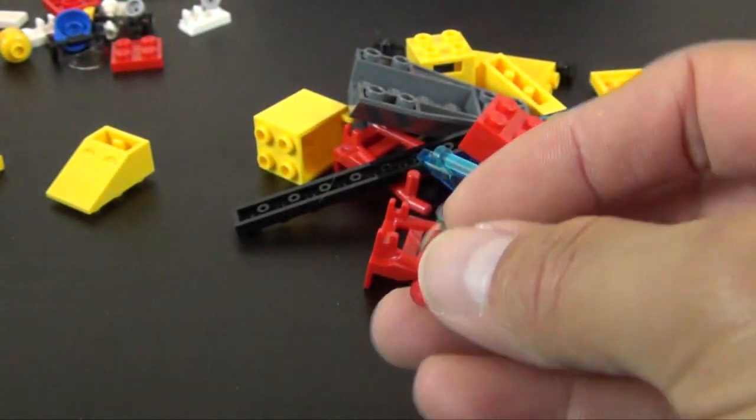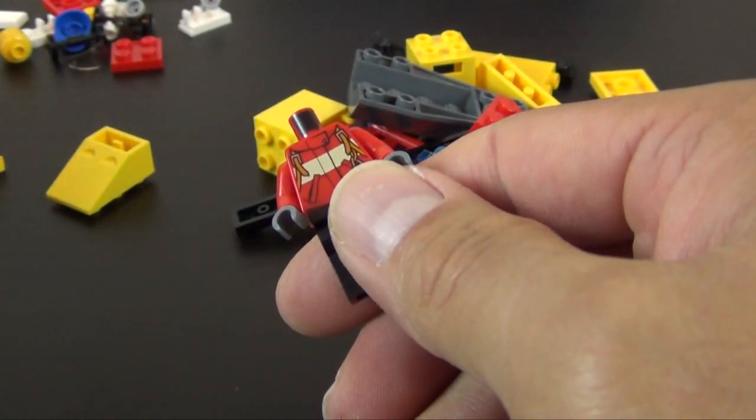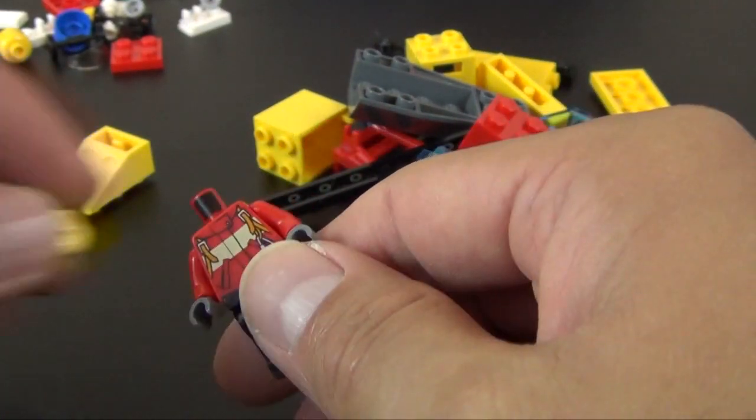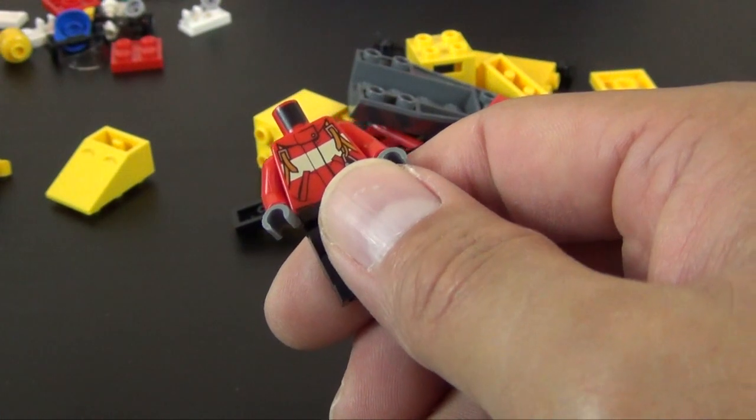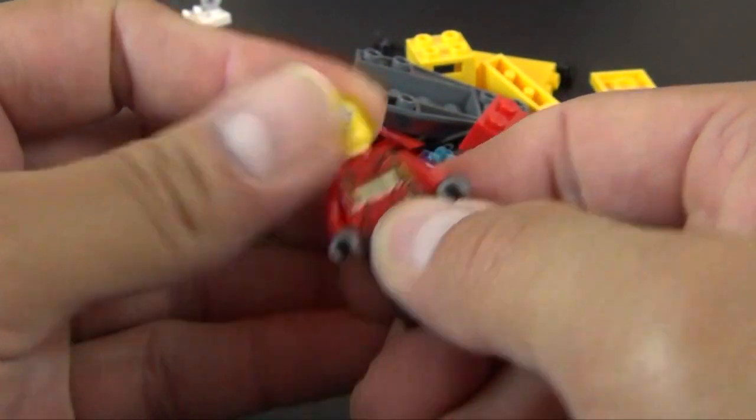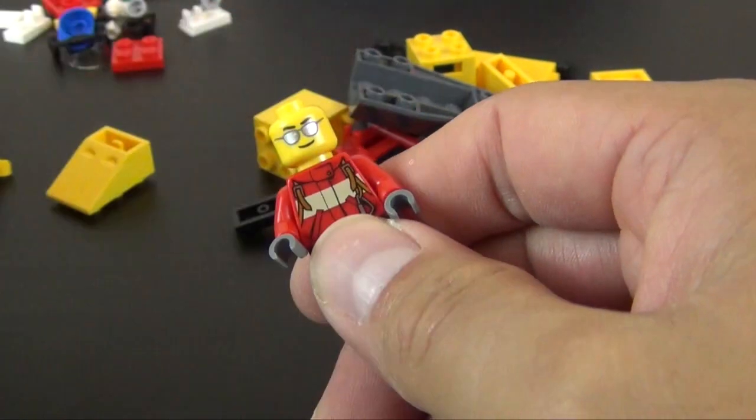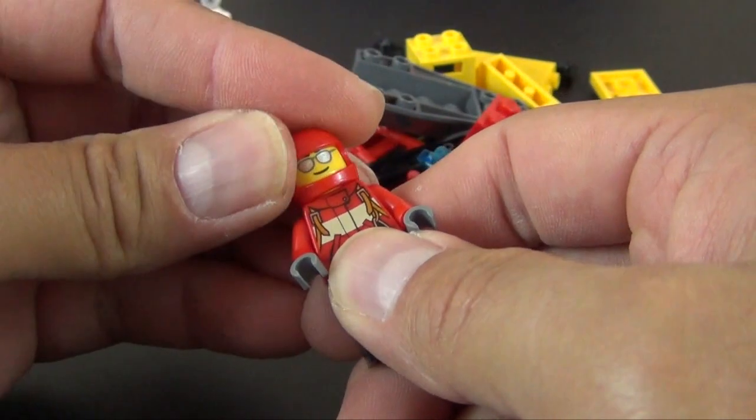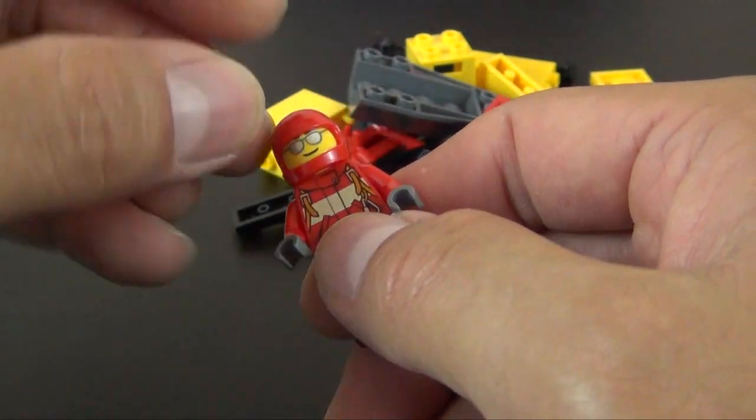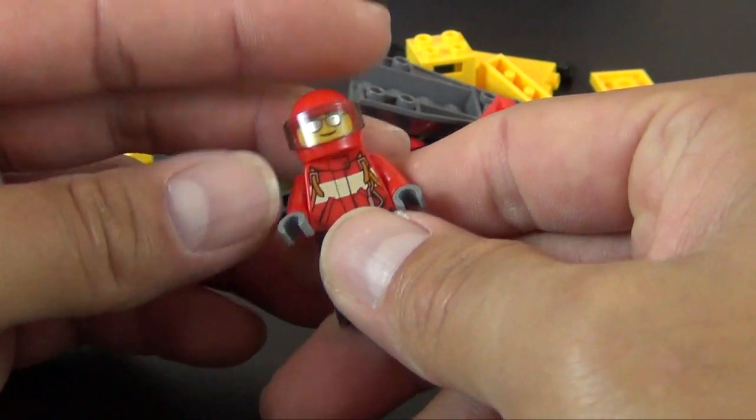Move that one to the side. Next one is using this other red torso. So this guy is wearing sunglasses. All of the heads are printed slightly different. So that helps differentiate which one goes on which character. So this is probably the helicopter pilot.